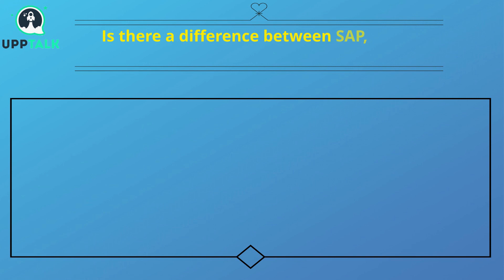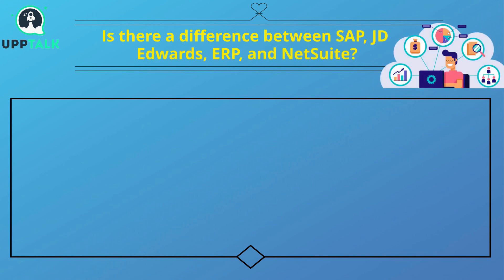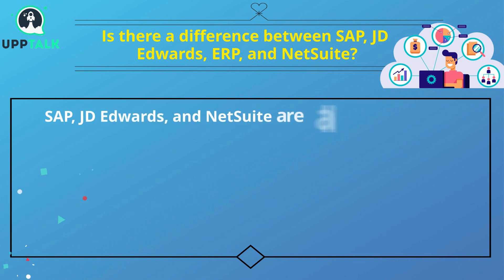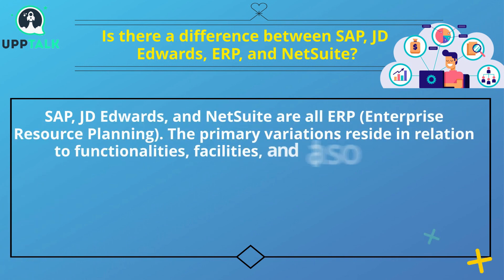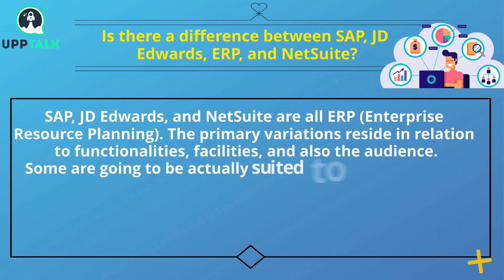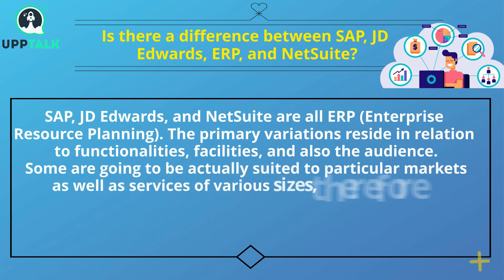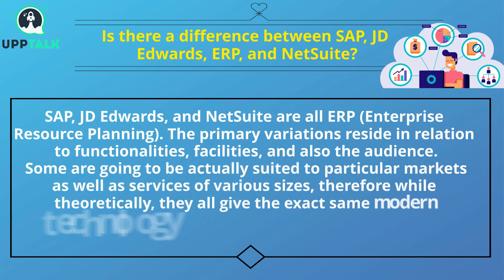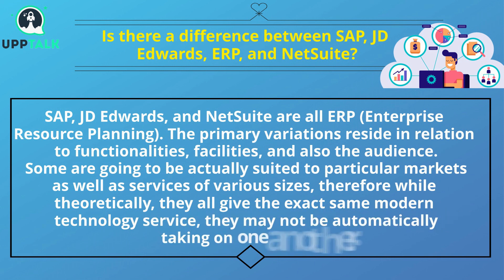Is there a difference between SAP, JD Edwards, ERP, and NetSuite? SAP, JD Edwards, and NetSuite are all ERP — enterprise resource planning — systems. The primary differences lie in functionalities, deployment infrastructure, and target audience. Some will be suited to particular industries and businesses of various sizes. Therefore, while technically they all deliver the same type of technology solution, they are not necessarily competing directly with one another.